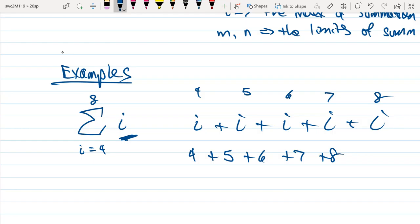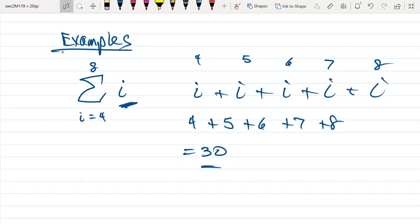And if we add this together, 9 and 6 is 15, and 7 is 22, plus 8 is 30. Notice that from 4 to 8, there were 5 terms. And if you start with the end point minus the starting point plus 1, it will tell you the number of terms that appear in the summation.